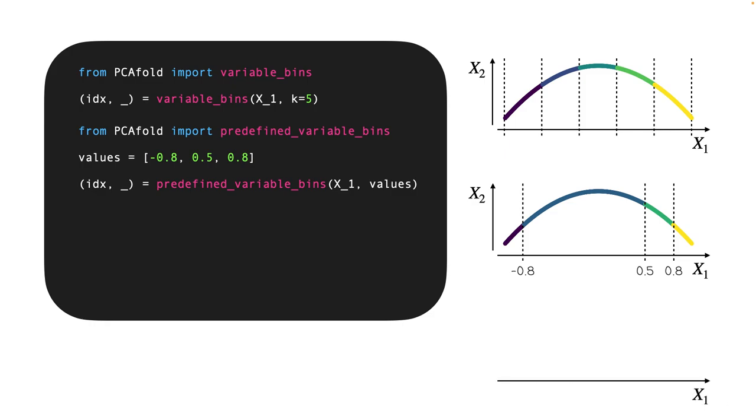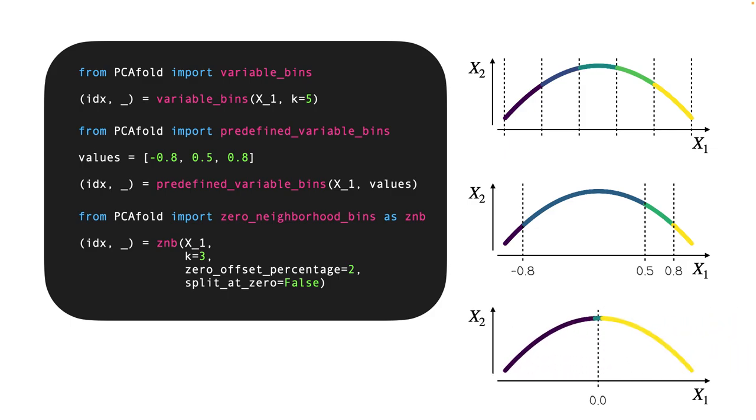Finally, there's a functionality that allows to isolate into one cluster all near-zero states in a variable. This can be very useful when clustering physical variables, say a combustion dataset, where we want to separate all states that correspond to near-zero reaction rate, for example. And you can use the function zero-neighborhood_bins and specify the total number of clusters to create and at what offset from zero should the near-zero cluster be created. In this case, I choose two percent offset. And you can also separate near-zero positive and near-zero negative values into two clusters by setting the split_at_zero flag to true.